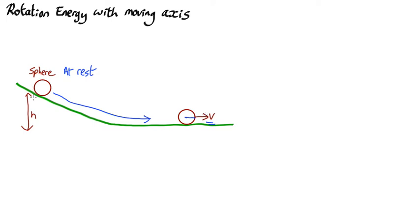You might think you could just do the potential energy, mgh equals half mv squared, and that would be correct if the sphere was sliding along a frictionless surface, but in fact it's rolling. So not only do you have to worry about the motion of the center of mass, you also have to worry about the rotation.